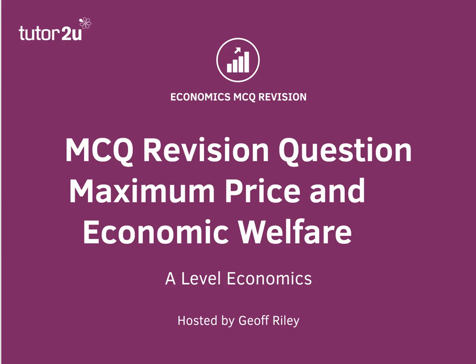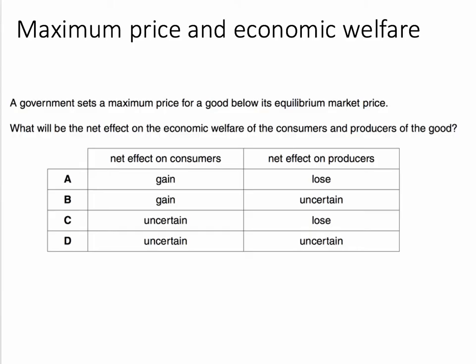Here's a question on maximum prices. This one focuses on the effect on consumer welfare and also producer welfare, which together accounts for economic welfare. The question: the government sets a maximum price for products below its equilibrium market price. What will be the net effect on the economic welfare of consumers and producers?